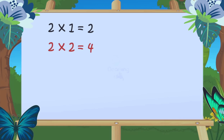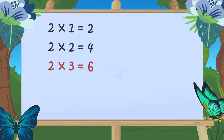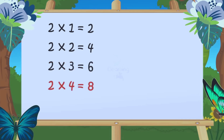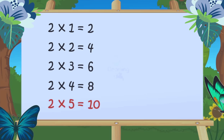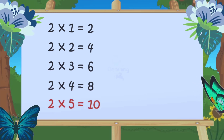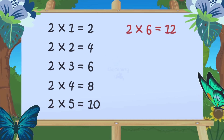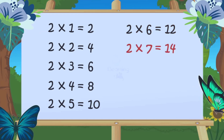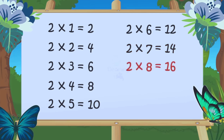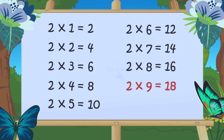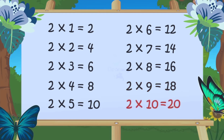2 1s are 2, 2 2s are 4, 2 3s are 6, 2 4s are 8, 2 5s are 10, 2 6s are 12, 2 7s are 14, 2 8s are 16, 2 9s are 18, 2 10s are 20.